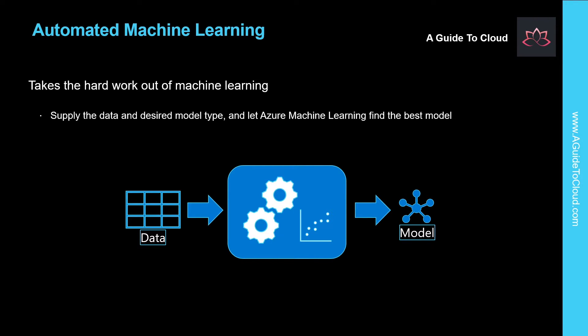Automated machine learning helps data scientists increase their efficiency by automating many of the time-consuming tasks associated with training models. It enables them to use cloud-based compute resources that scale effectively to run multiple training experiments in parallel, while incurring costs only when they are actually used.